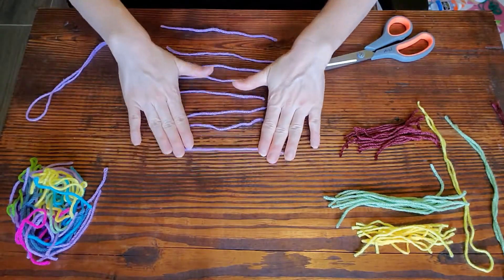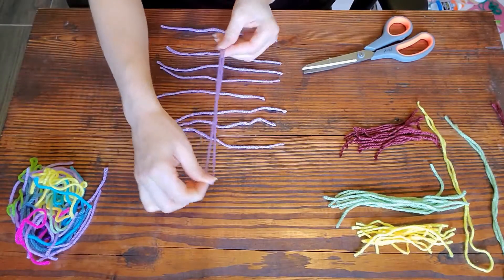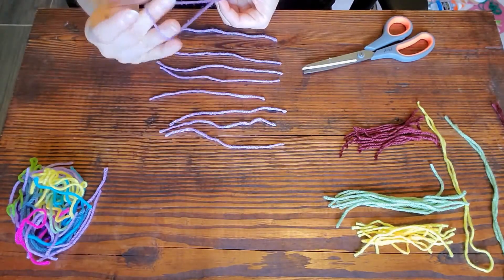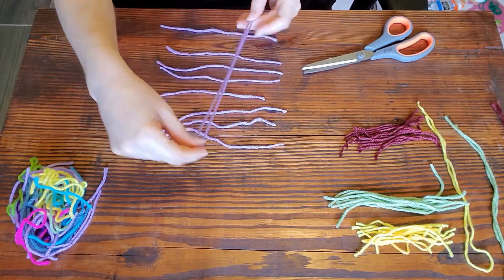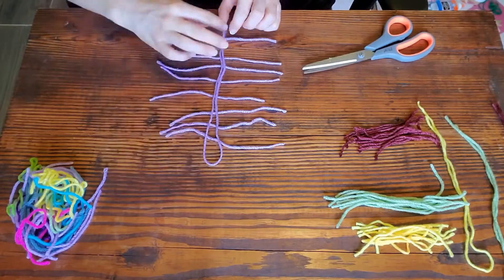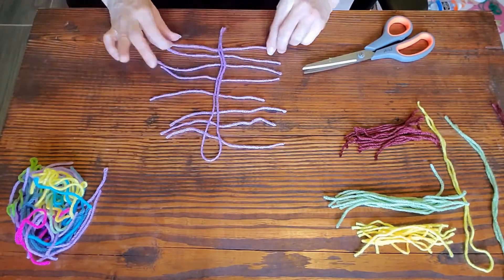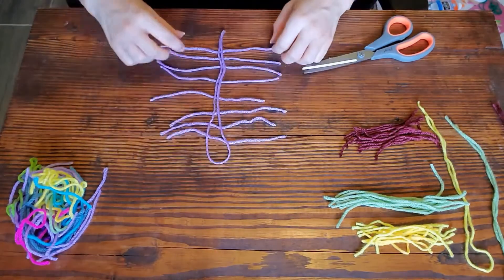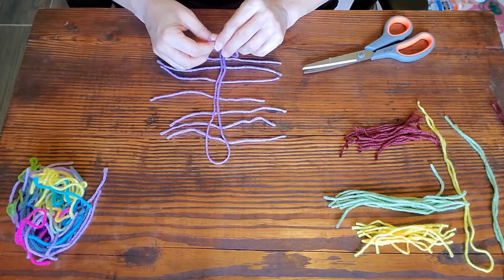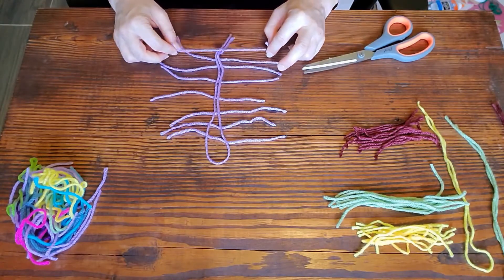Then I'm going to lay my long piece over in half so that the loop top is at the top. Then, super easy, all I'm going to do is tie each strip around.